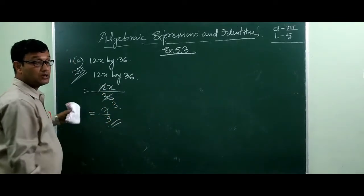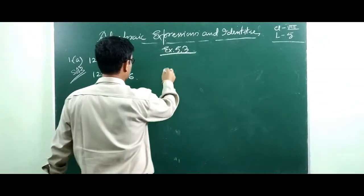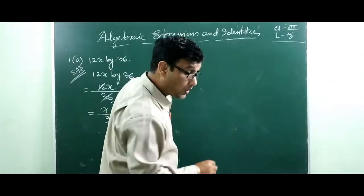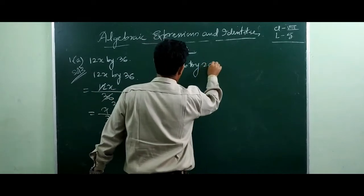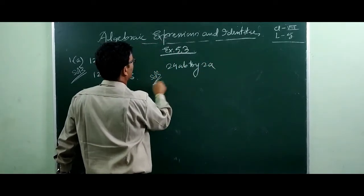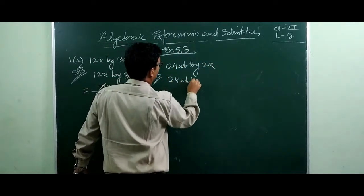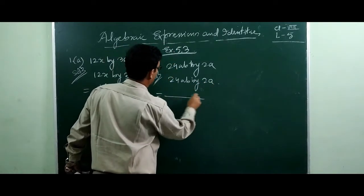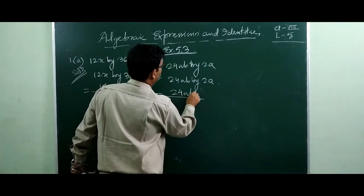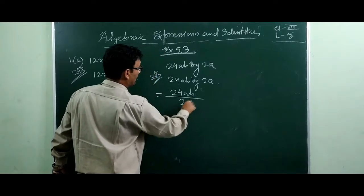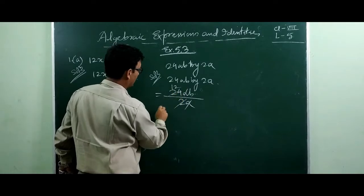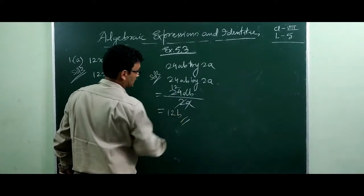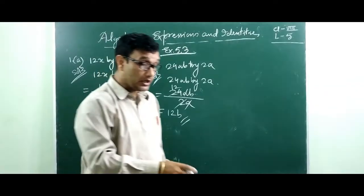Similarly, the next example: 24ab divided by 2a. We write 24ab by 2a, and cancel a with a. 24 divided by 2 gives 12, so the answer is 12b.